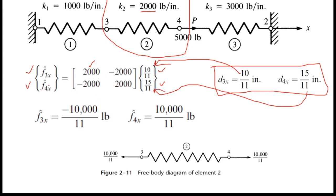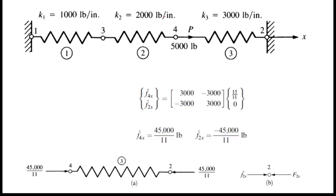For spring 3, the node numbers are 4 and 2. The forces are written as f4x-cap and f2x-cap. The displacement of node 4 is 15/11, and node 2 is fixed, so its displacement is 0. We can simplify this equation to get the answers for f4x-cap and f2x-cap.